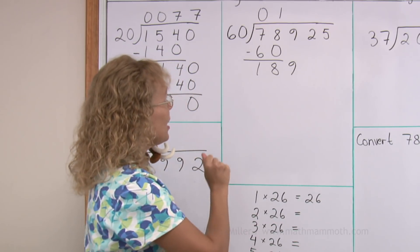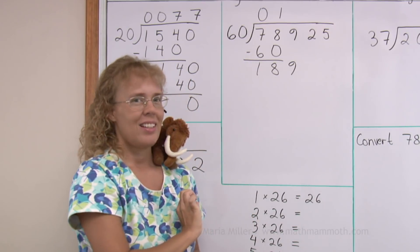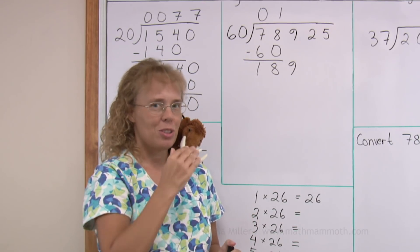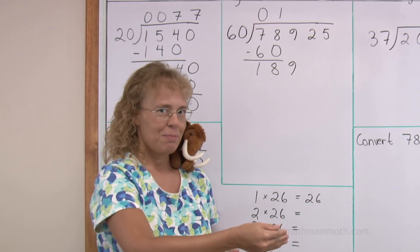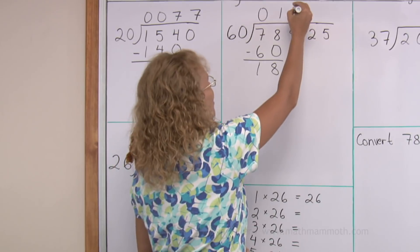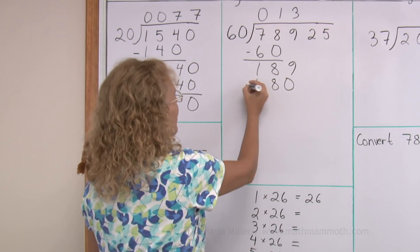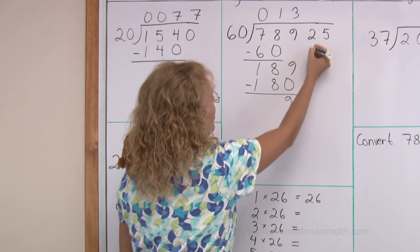189. Now, can you tell how many times does 60 go into 189? It's not difficult, but there's 60. 60. That would be 120. And the third time, 180. So, 3 times. And we get 180 here. Subtract. And 9. And then drop down 2.